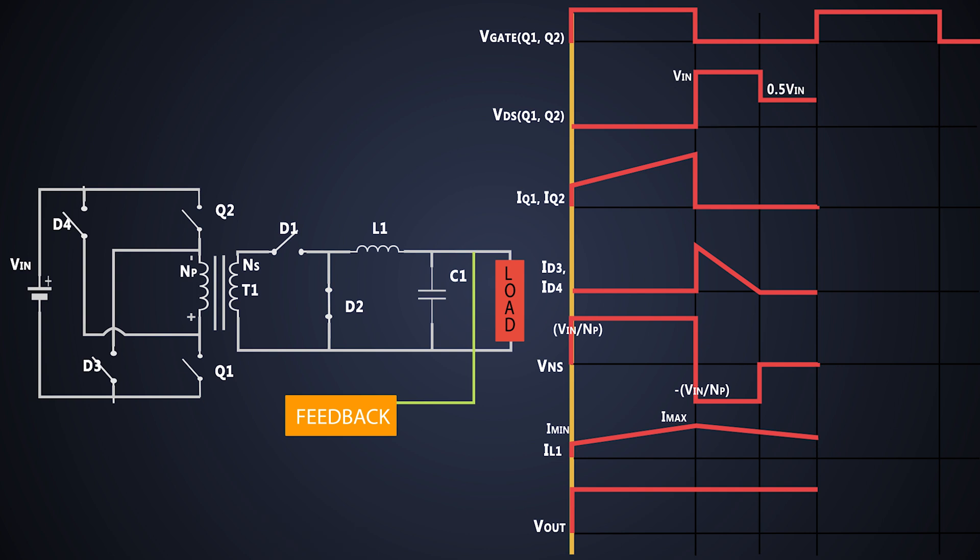So if you see, there are basically 3 steps of working of double ended forward converter. And these steps repeat every time to get the constant power at the output.